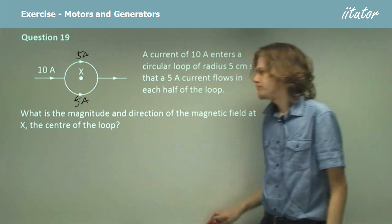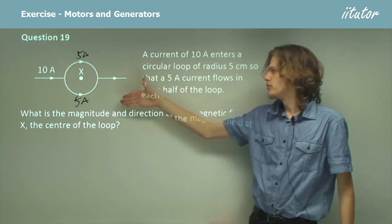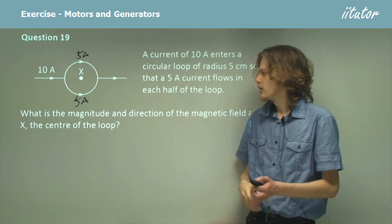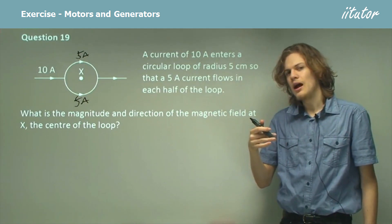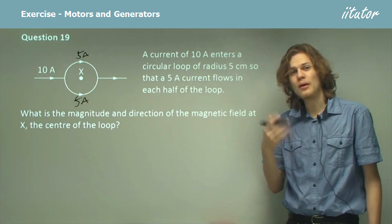Let's think about this. Because we have 5 amperes in each side of the wire, we can calculate the effect of one and then just add the effect of the other, because the magnitude will be the same.